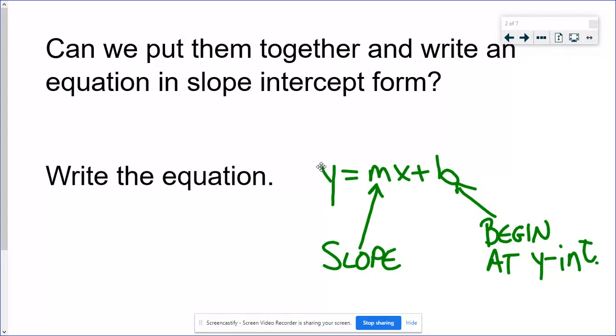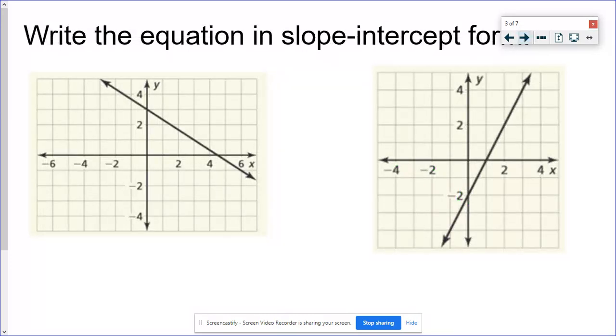Hopefully again you remember slope intercept form from last year. Y equals mx plus b. And we've referenced that already this year when we were trying to decide if functions were linear we'd said could it be written like y equals mx plus b. So before we actually do a graph let's take a look at lines that are already graphed and see if we can find the slope because we're good at counting slope and see if we can find the y-intercept so we could actually write these equations.